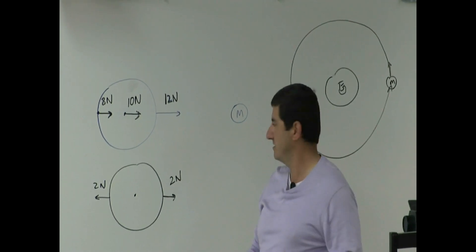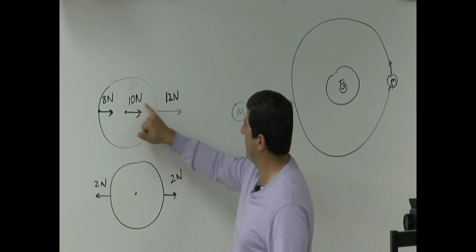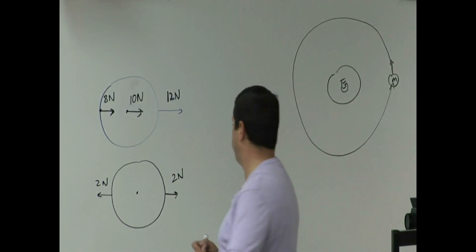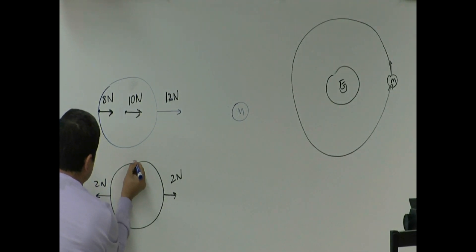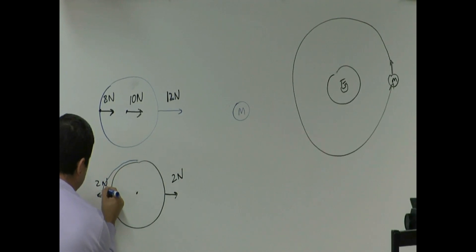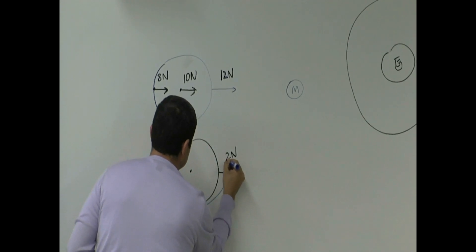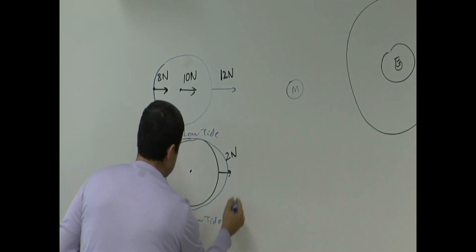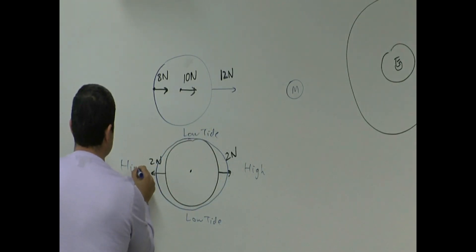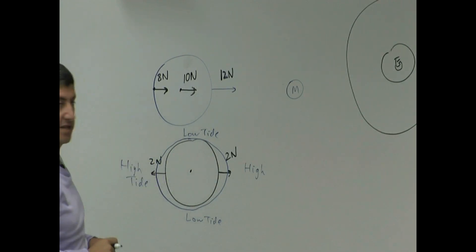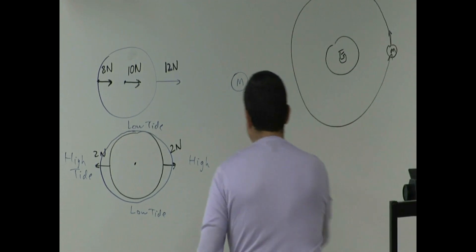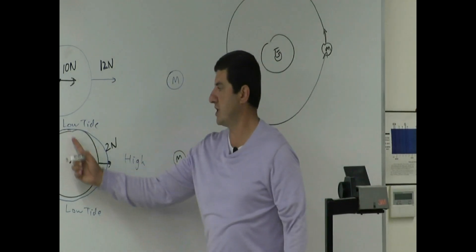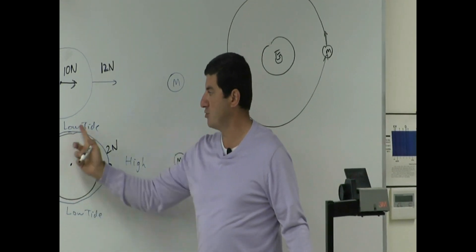The second effect is the tidal effect. Because this force is larger than this — 12 minus 10 is 2, 8 minus 10 is negative 2 — it pulls the earth like this. So if you have a body of water on the earth, this side of the earth facing the moon is going to have a high tide, and the side opposite to the moon also has a high tide. These two sides in between have low tides. So the side of the earth facing the moon and the side opposite to the moon both have high tides, and the other two sides have low tides.